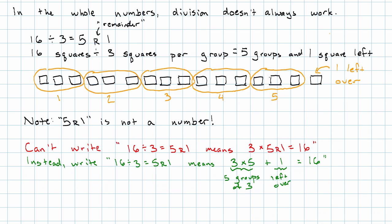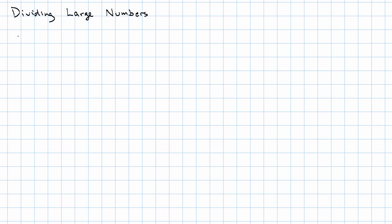In a future video, we're going to talk about how we work with remainders when they come up in real life. Working with remainders is also going to be helpful when we go to do division with large numbers. Let's say we want to divide 4,782 by eight. Obviously, I don't want to do that by drawing a picture of 4,782 squares. Let's see if the place values can help us. We have four thousands, seven hundreds, eight tens, and two units.